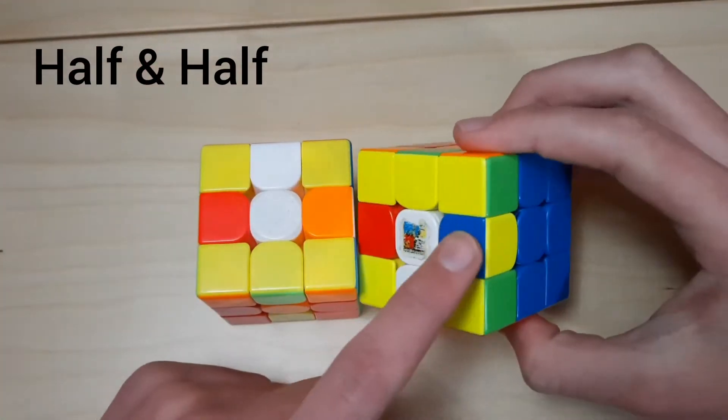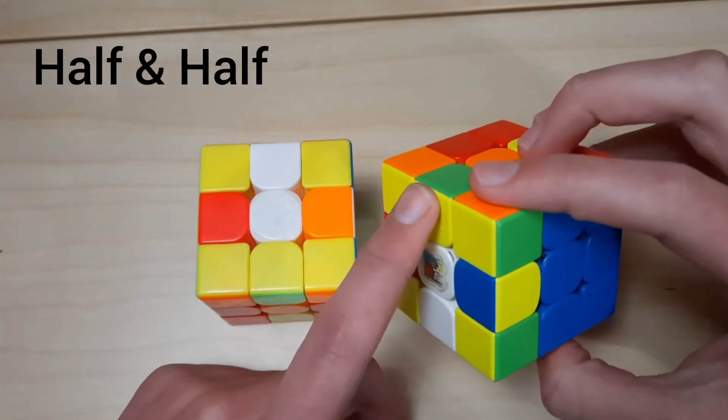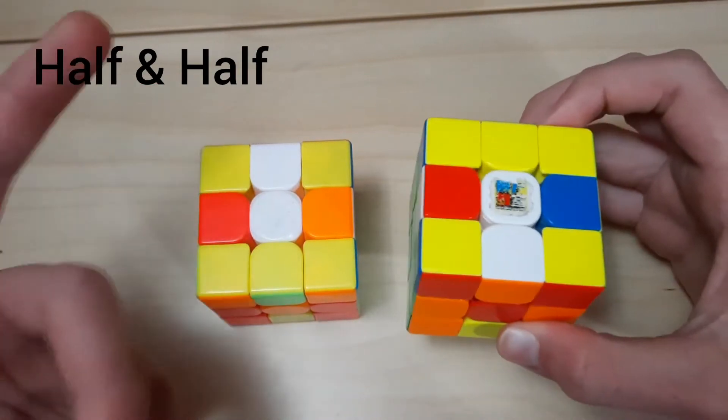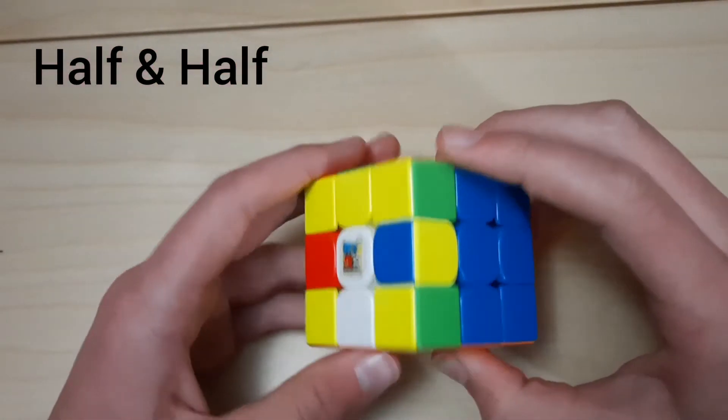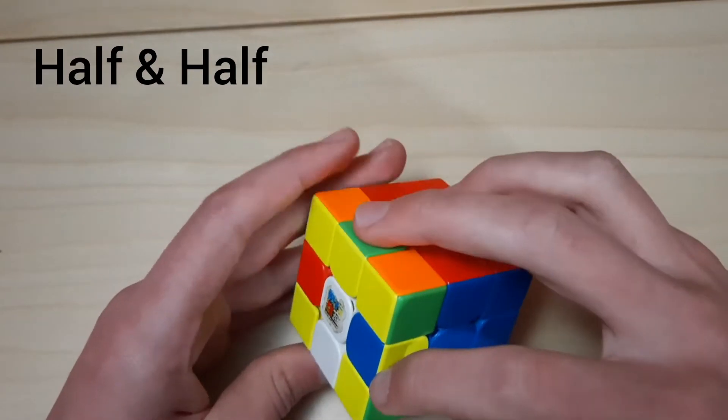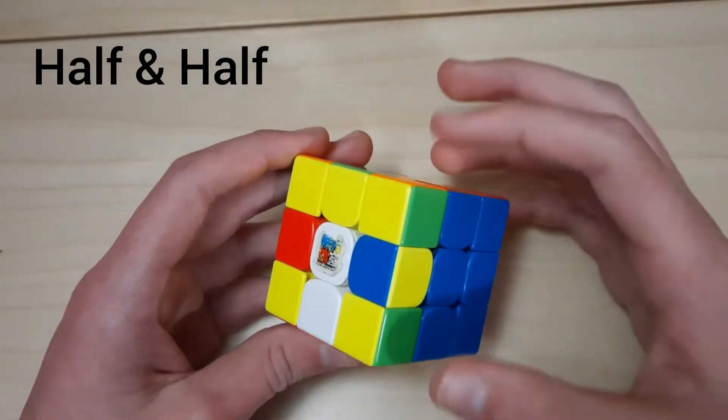In this group, we have one LR edge misoriented and another one oriented. I call this group half and half. So here we have them both in the top layer. With the other case, they'll be in both layers.